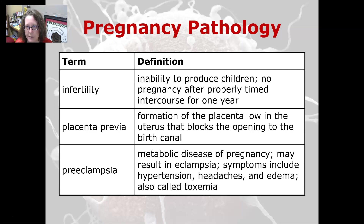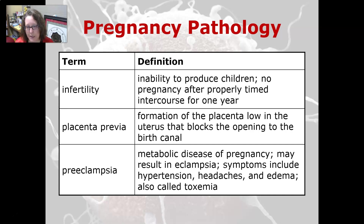Infertility is an inability to produce children — no pregnancy after properly timed intercourse for at least one year. Placenta previa is a formation of the placenta low in the uterus that blocks the opening to the birth canal, which can be dangerous because the placenta can rupture. Babies with abrupted placenta and placenta previa both need to be delivered by C-section. Pre-eclampsia is a metabolic disease of pregnancy that may result in eclampsia if there is no intervention. Symptoms include hypertension, headaches, and edema. It is also called toxemia of pregnancy, and we screen for it by checking for protein in the urine.